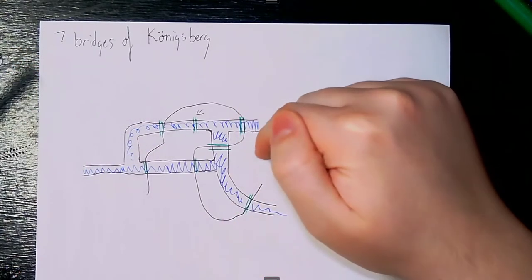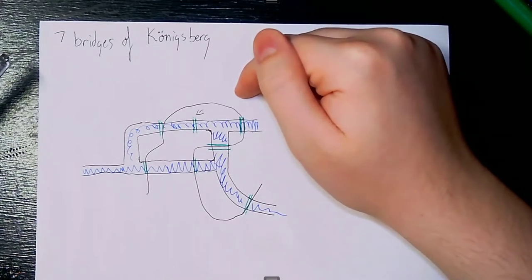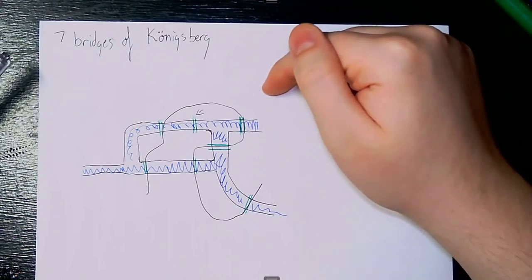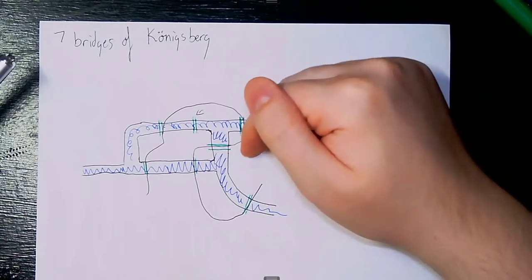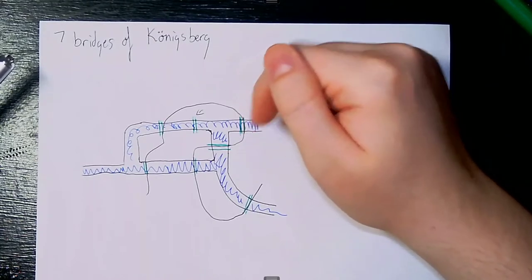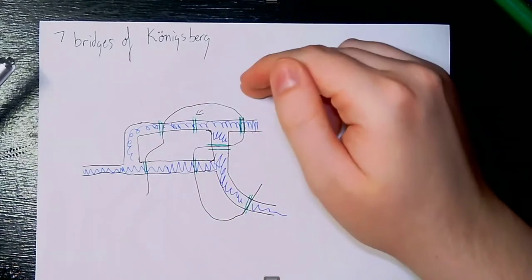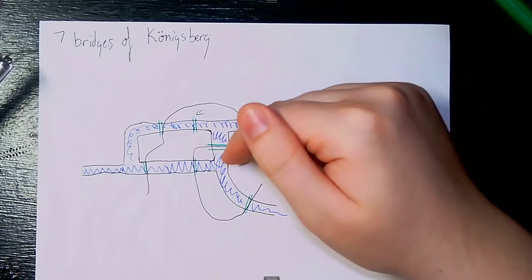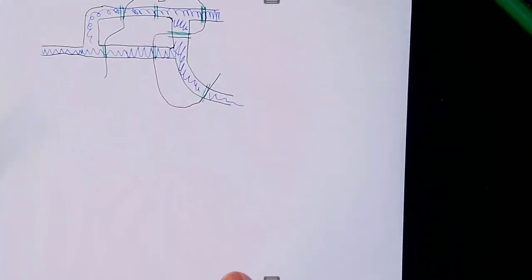When he was looking at this problem, what he realized is that it doesn't really matter how large the land masses are, or what shape they are, or even where they are in relation to each other. It doesn't matter how long the bridges are, or if they're completely straight or curved. None of that matters. All that matters is that the land masses are connected — which land masses are connected, which are not.